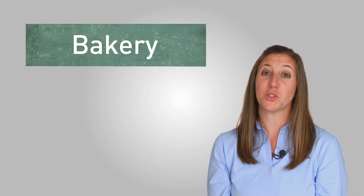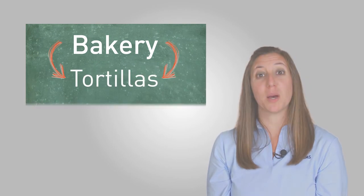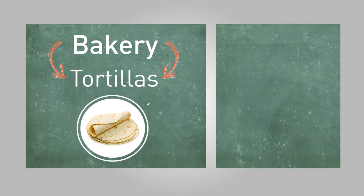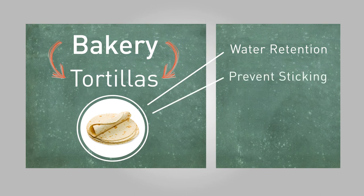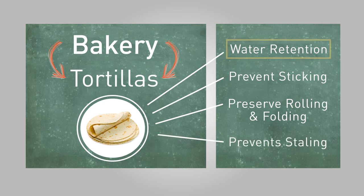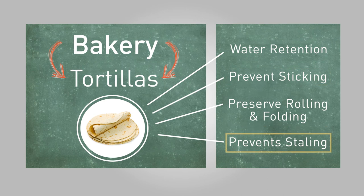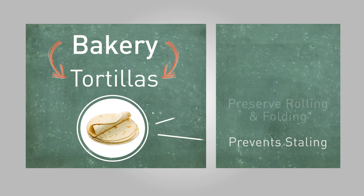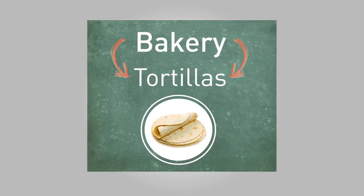So what notable foods actually make use of cellulose gum? One of the more common uses of cellulose gum is in bakery — for example, in tortillas. The most important job of cellulose in tortillas is maintaining water retention, preventing stickiness with other tortillas and equipment, and preserving those rolling and folding characteristics. Not only that, but it helps prevent staling too. All these benefits prove just how effective cellulose is in keeping the product consistent with what customers expect when they purchase and enjoy a tortilla.